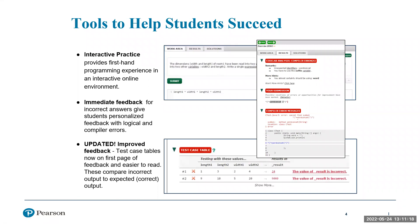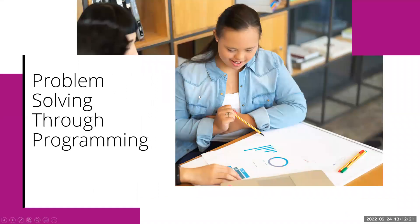Feedback is updated and improved, with test case tables now on the first page so students can read feedback before going into their mistakes. When students click on 'hints,' it opens a simplified version of the question — we call it the learning aids — which not only gives feedback but simplifies the problem for the student. This hint feature is new in MyLab Programming and helps students practice and improve results.